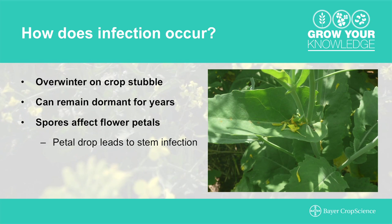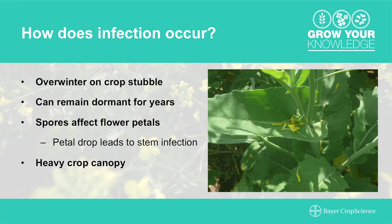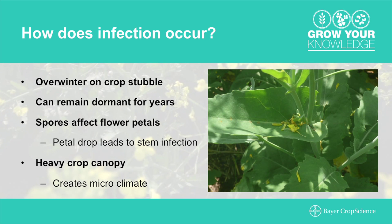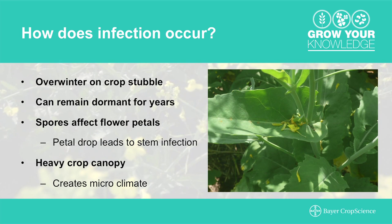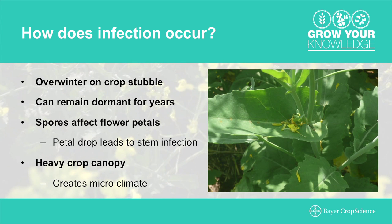The conditions most conducive for the disease are warmer temperatures and higher moisture. A heavy crop canopy creates a greenhouse-like effect — those big leaves that are the solar panels for the plant also create a microclimate that is more conducive for the disease to infect.